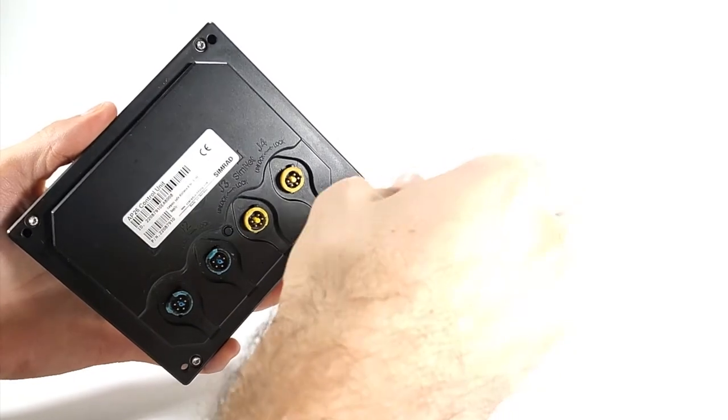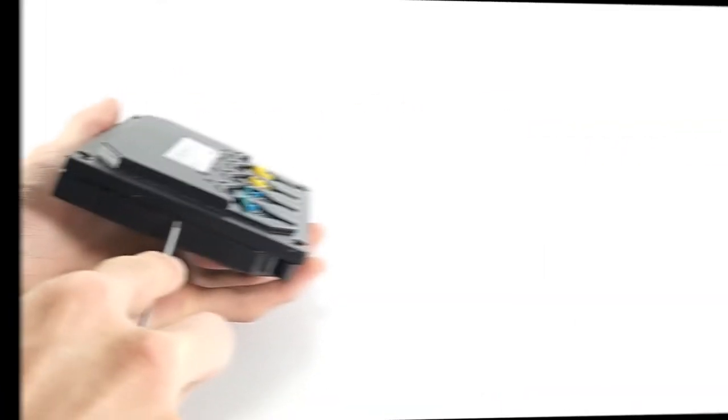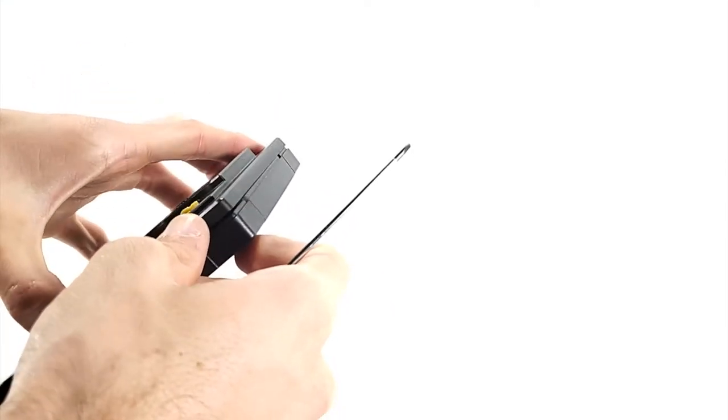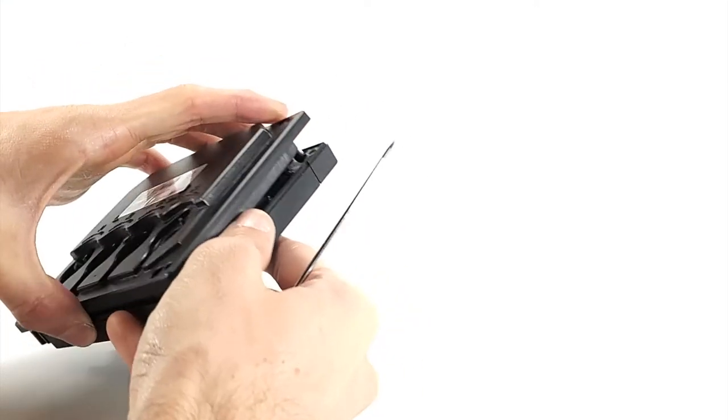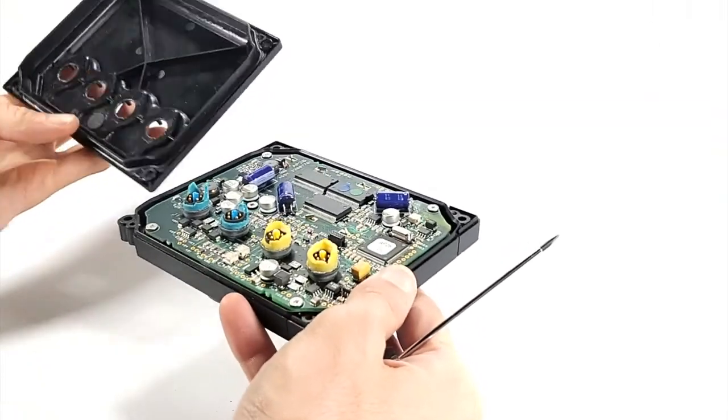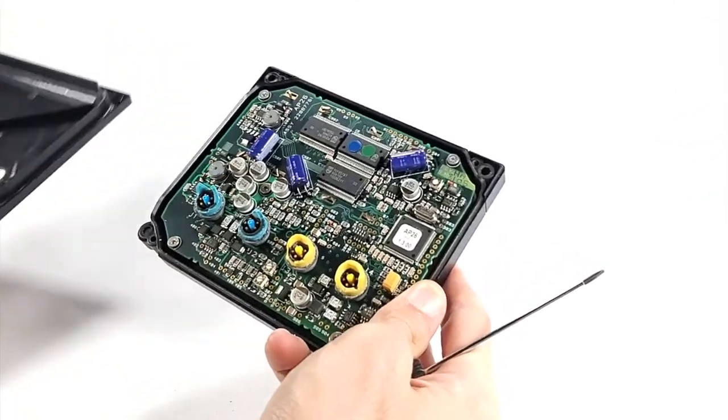Remove the four screws from the back and set aside for later. Gently and evenly pry the front and back of the control unit until the back cover is separated from the front of the unit. Once it is loose it can be removed and set aside for later.